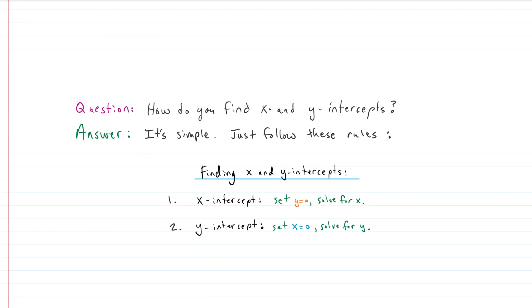First question: how do you find x and y-intercepts? Well, the answer, lucky for us, is fairly simple. We just have to follow a couple rules. To find the x-intercepts we set y equal to zero in the equation and then solve for x. To find y-intercepts we set x equal to zero and then solve for y.